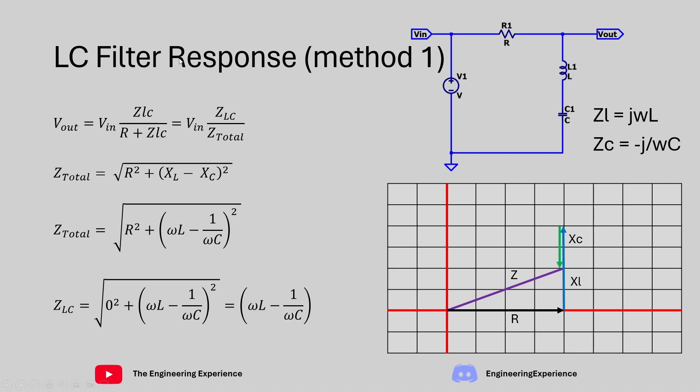Now doing the same thing on the ZLC over here we basically do not have a real component in this section. So the R becomes 0 and obviously the imaginary part stays the same as our load is against those two imaginary components.